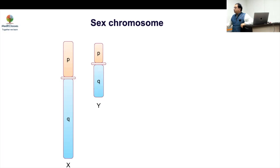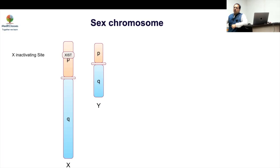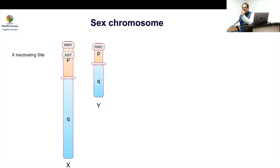Regions not common to both X and Y carry a risk of having a double amount of genes and are therefore inactivated. This inactivation is controlled by a small group of genes within the X chromosome, known as XIST — the X-inactivating site — which inactivates all the genes present in X but not in Y. The shared pseudo-autosomal regions behave like autosomal genes, and these genes are responsible for the manifestations of Turner syndrome.